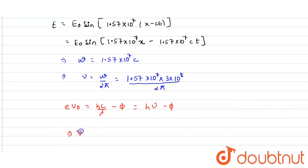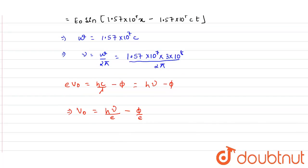So from here, the stopping potential V0 comes out to be h nu upon e minus phi upon e.